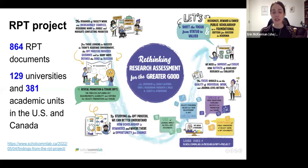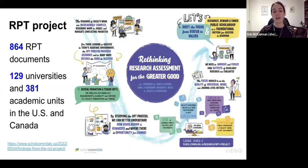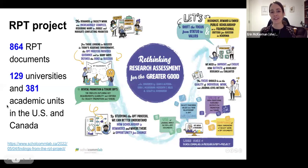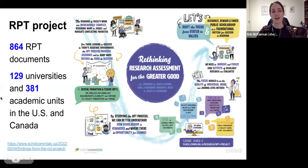It was 129 universities and 381 academic units across the US and Canada. If you'd like to read more about the project itself, there's a link on the slide. It's a really nice blog post they put together at the ScholCom Lab with some infographics that talk about all the different studies that we carried out as part of this larger project.